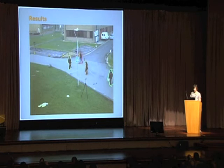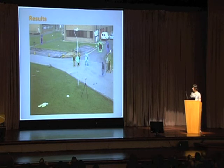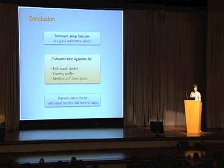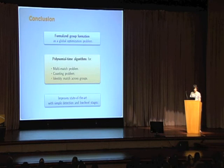Here's a short video. You can see that there are quite some complicated merges and splits, and the system is still able to track. That's a sample of the sort of video we can work with. In conclusion, we formalized group formation as a global optimization problem, proposed polynomial time algorithms for the multi-match problem, the counting problem, and identity matching across groups, and improved state-of-the-art with just simple detection and low-level stages. Thank you for your time.